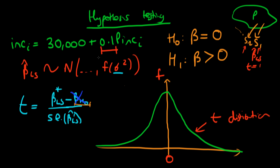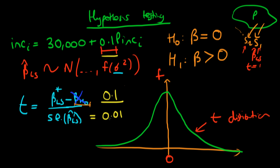How could we have got a value of 0.1 when we estimated this equation using our sample? We'd have to divide that by the standard error of the estimate to get the t-statistic. Let's say the estimated standard error was 0.01. In that case, the t-value for this coefficient would be equal to our estimated beta least squares divided by the standard error, which would be equal to 10.